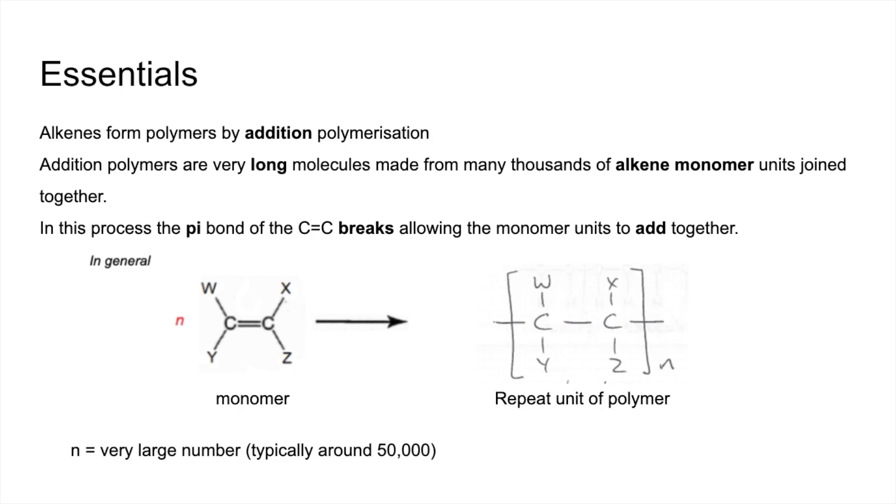Typically it's around about 50,000. As we said, many thousands of alkene monomer units. Don't forget the end bonds. It's really important that you stick that through the bracket on both sides. What that does is it shows that this continues, so your next repeat unit on this side will be there, your next repeat unit on this side will be there.